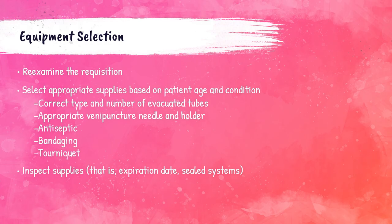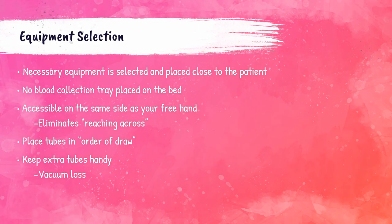Before performing venipuncture, the phlebotomist should re-examine the laboratory order to ensure they have all needed supplies. Select appropriate supplies based on the patient's age and condition: the correct type and number of tubes, appropriate gauge needle and holder, syringe or butterfly, antiseptic, bandage, tourniquet, and 2x2 gauze. Supplies must be inspected to ensure equipment is in-date and packaging has not been tampered with. Place supplies on the side of the non-dominant hand, which is used to change tubes; the needle holder is held with the dominant hand. Tubes should be placed in order of collection, with extra tubes nearby in case any have lost their vacuum.